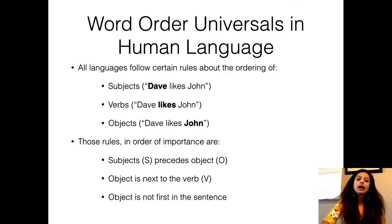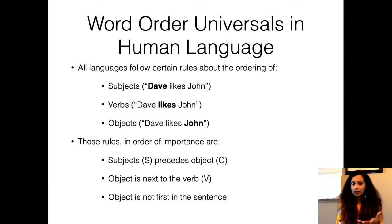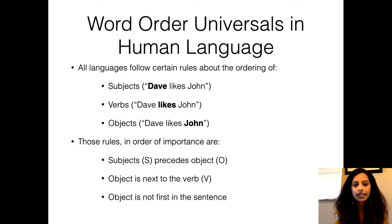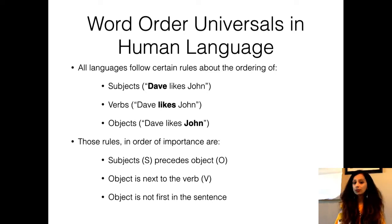Word order universals: in sentences like 'Dave likes John,' you can divide words by prominence. The subject is prominent in English — that is why you say 'Dave' first. Then you have the verb, very often in present or past tense with time information — 'likes' is the verb. Then the object: who does Dave like? John. With respect to the ordering of subject, verb, and object in English, you can write rules: subject S precedes object O; the object is next to the verb; and the object is not first in the sentence.